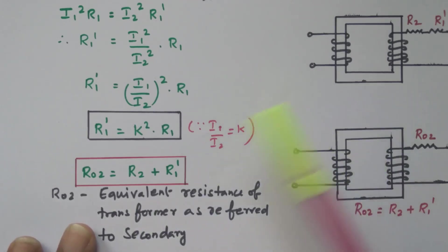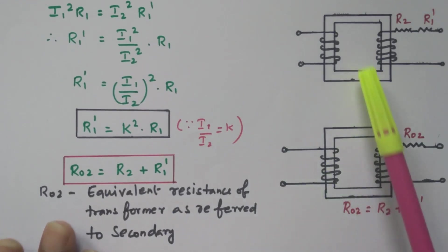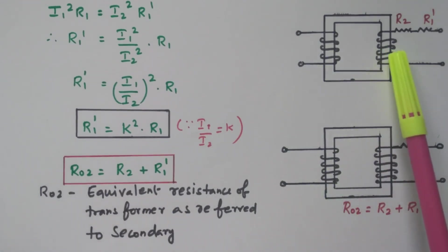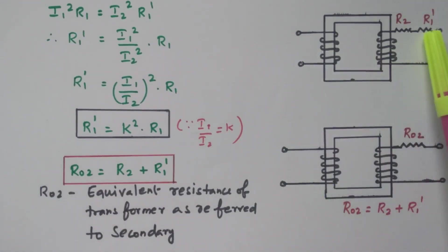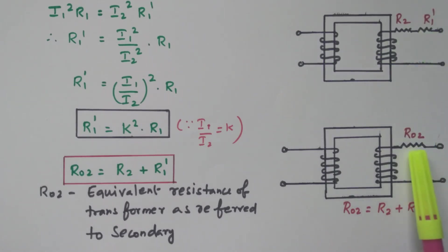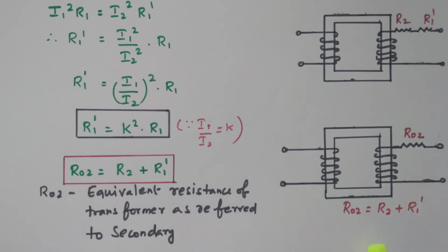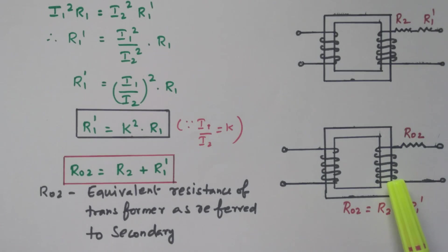See this diagram — the primary winding and secondary winding, the primary resistor is now transferred to the secondary so it becomes R1 dash. Both are in series, so that can be written as R02. So R02 equals R2 plus R1 dash. Now we can make calculations more easily because all parameters are on the secondary side. We have discussed resistor transfer from secondary to primary as well as primary to secondary.